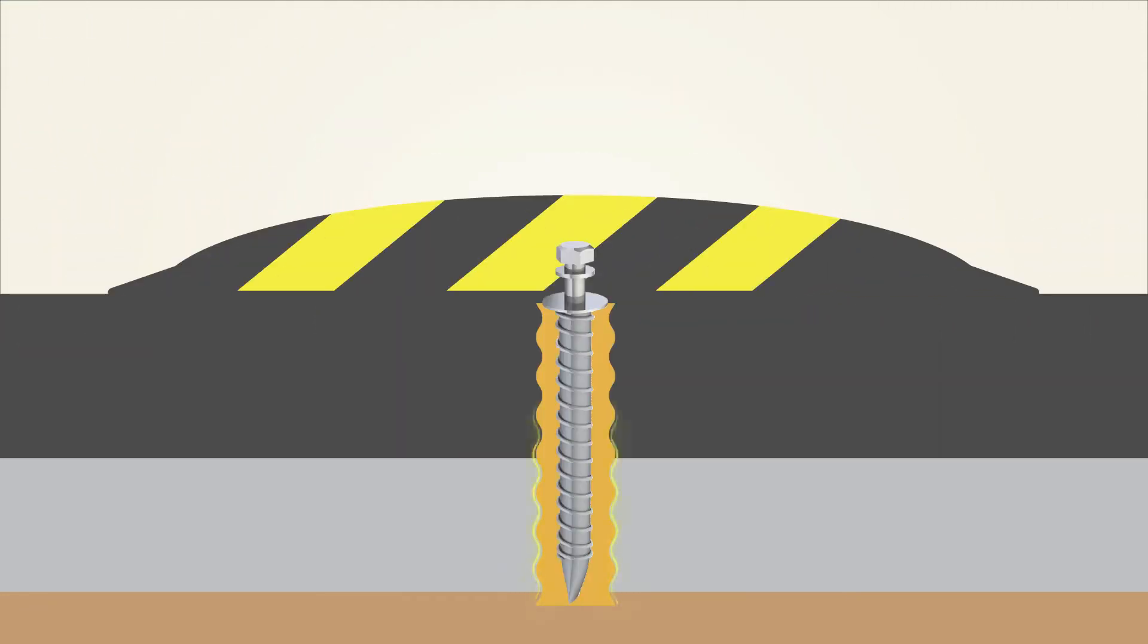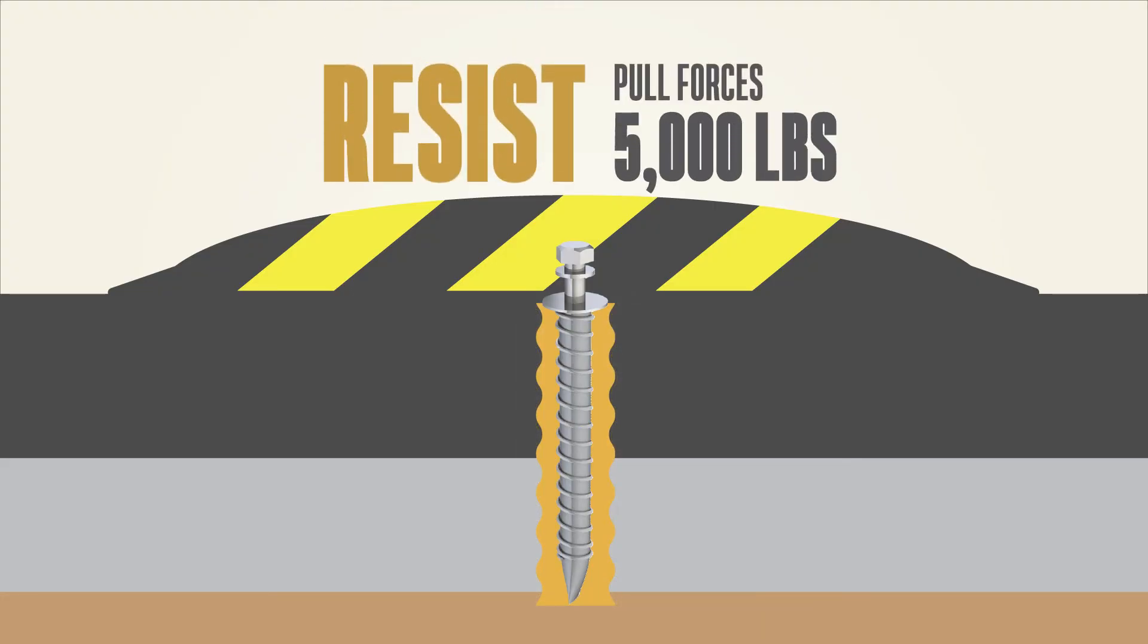AAC bolt hold anchors use stress-free bonding to the asphalt and can resist pull forces from 1,500 to 5,000 pounds per anchor depending on the anchor's size.